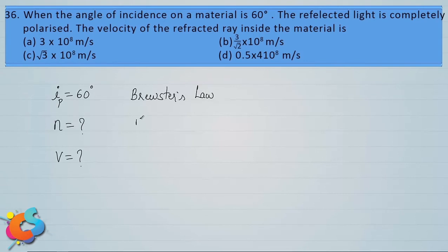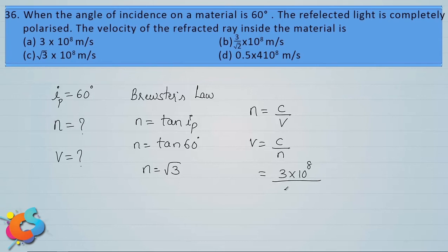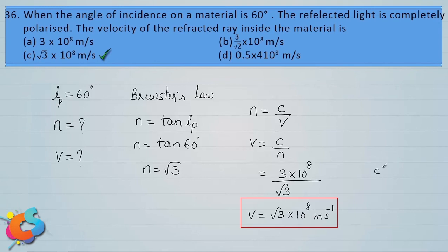Brewster's law: n = tan(ip) = tan(60°) = root 3. So the refractive index of the medium is root 3. Using n = c/v, the speed of light inside the medium is v = c/n = 3 into 10 power 8 divided by root 3, which equals root 3 into 10 power 8 meter per second. This is given in option c, so option c is the correct answer.